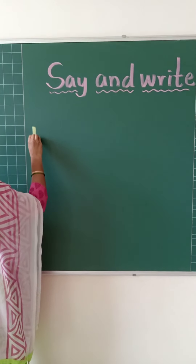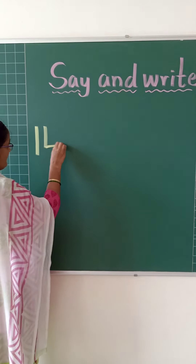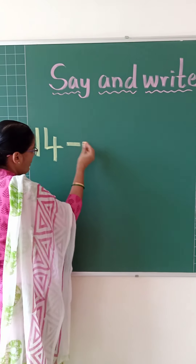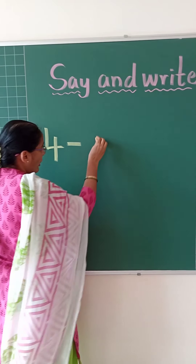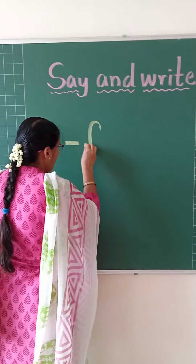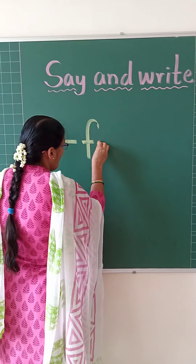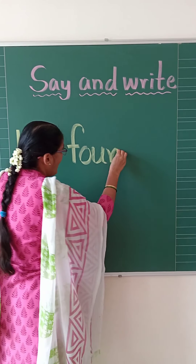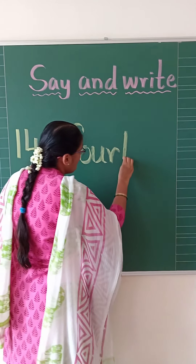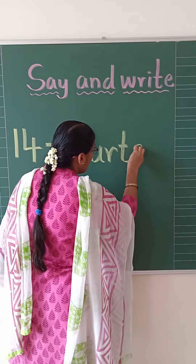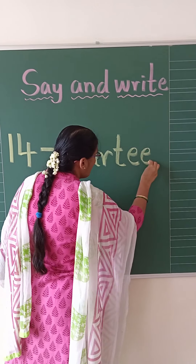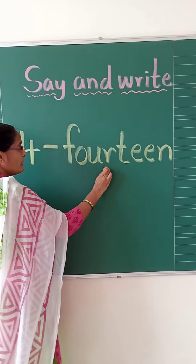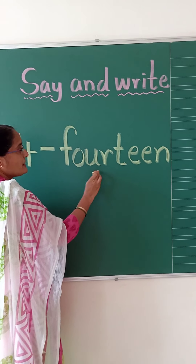First you have to write the number 14, put a small dash and write the spelling of 14. F-O-U-R-T-E-E-N. You already know the spelling for FOUR, children, isn't it?